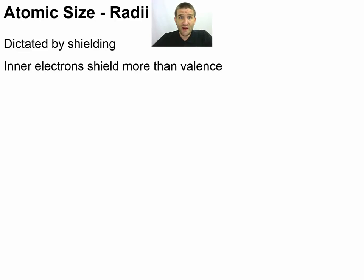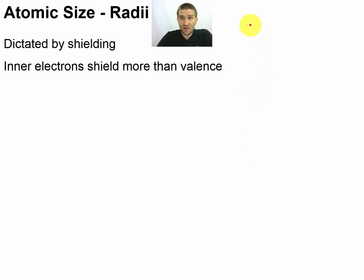Everything to do with atomic size is going to have to do with shielding. Our inner electrons are going to shield more than our valence electrons, and the analogy I like to use for that is to imagine that the atom is like a movie theater.